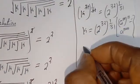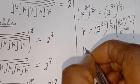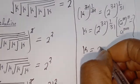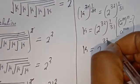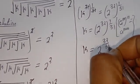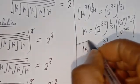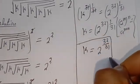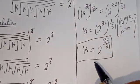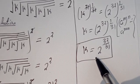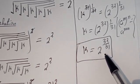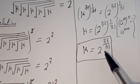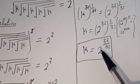Then this can be written as k equals 2 to the power of 32 over 31. And this is the final answer. You can see that the answer we got from the first method and the second method are the same. I hope you enjoyed the video — thank you for watching, please don't forget to like, share, comment, and subscribe to my channel. Bye.